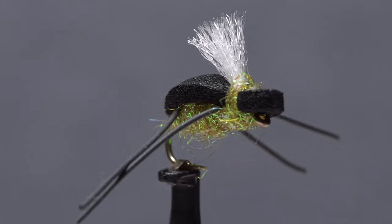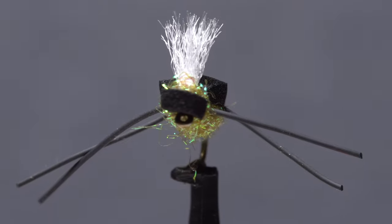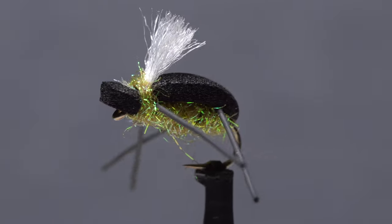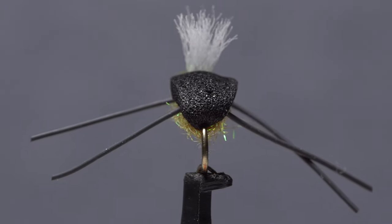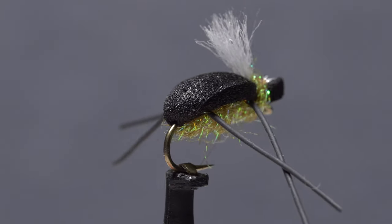I call this fly the Turbo Beetle as it's kind of a souped-up version of my regular beetle pattern. It works especially well in late summer and early fall and can be used for bass and panfish as well as trout.